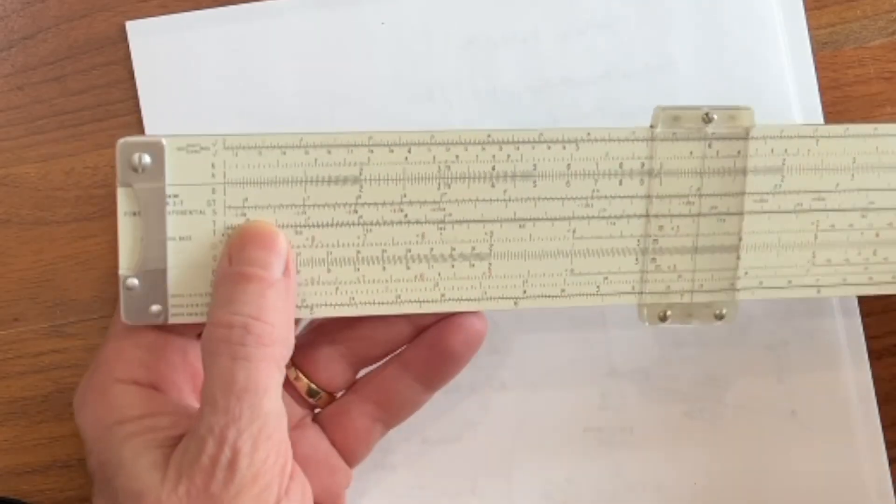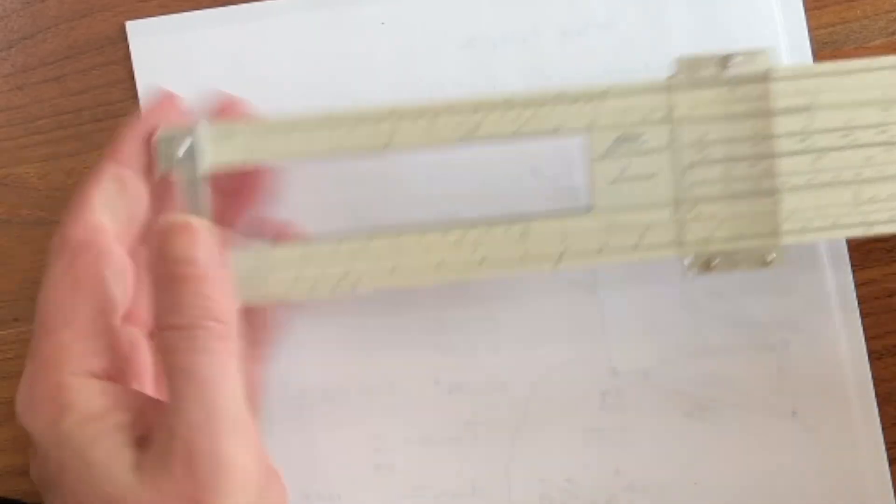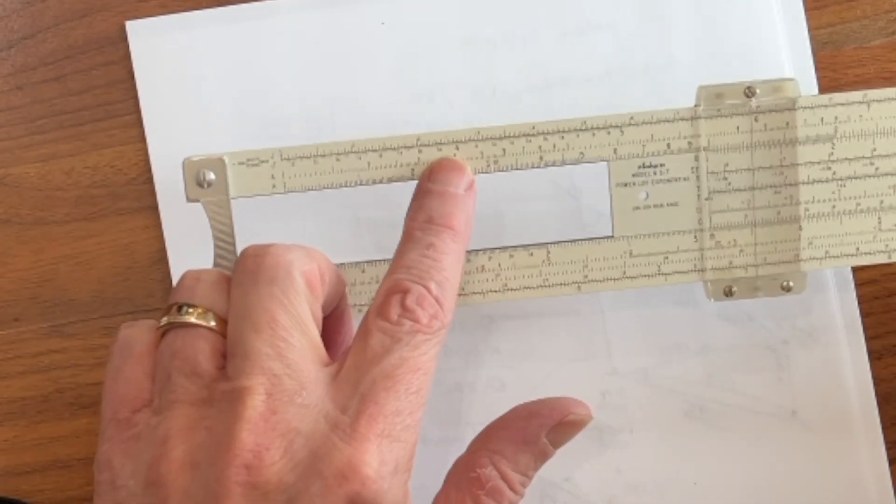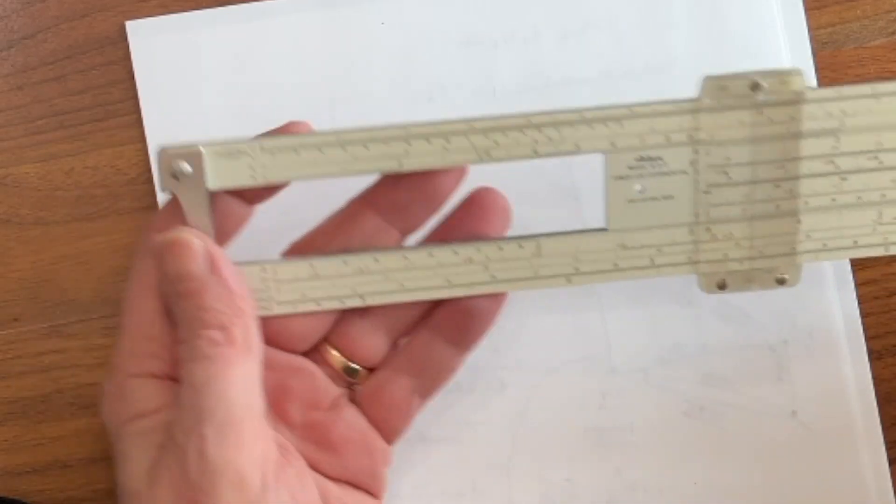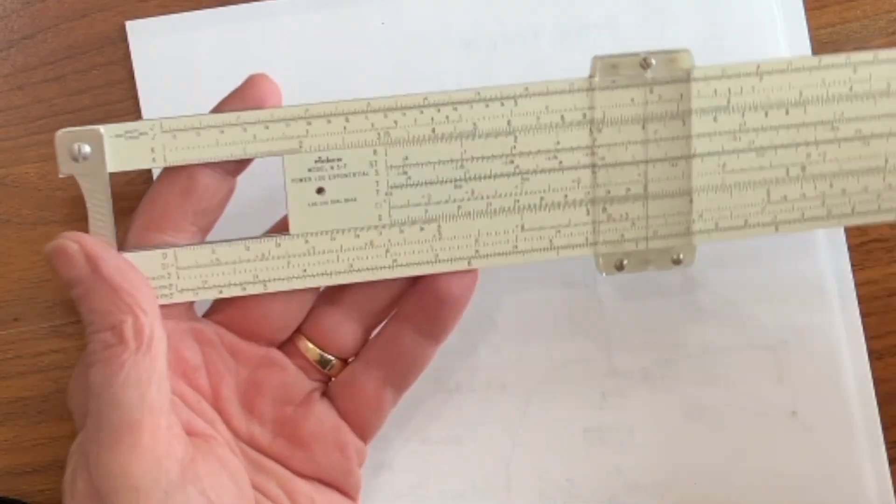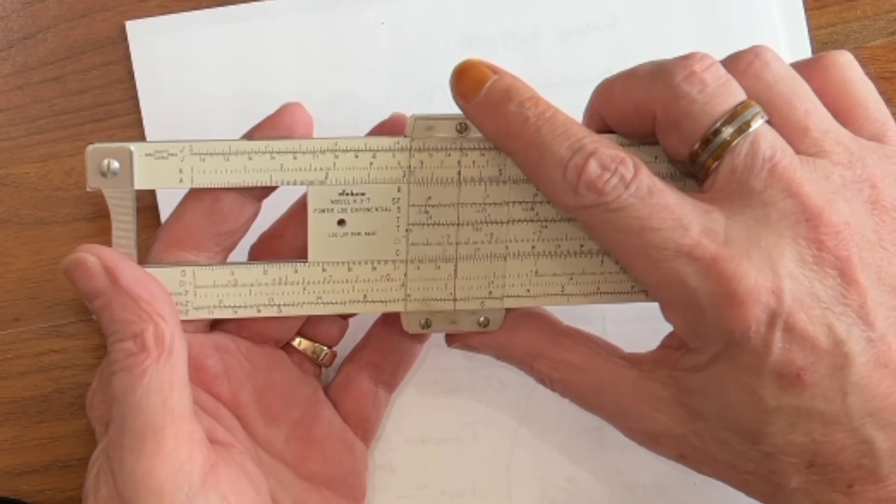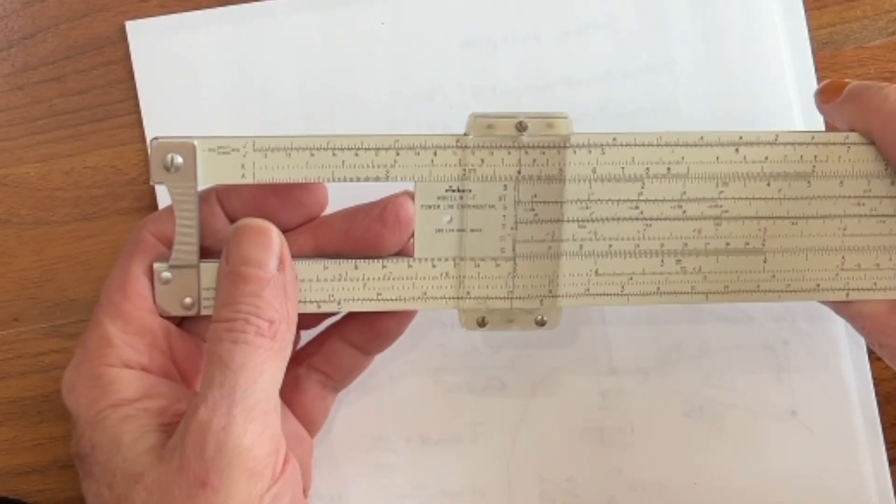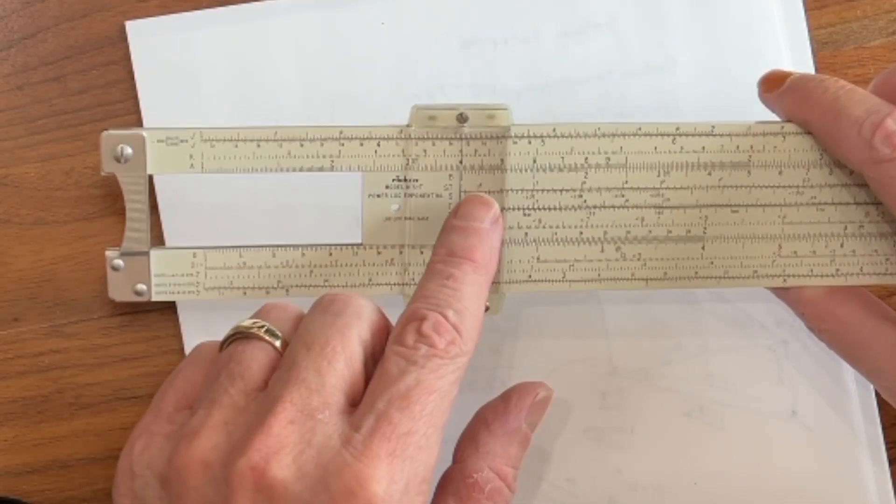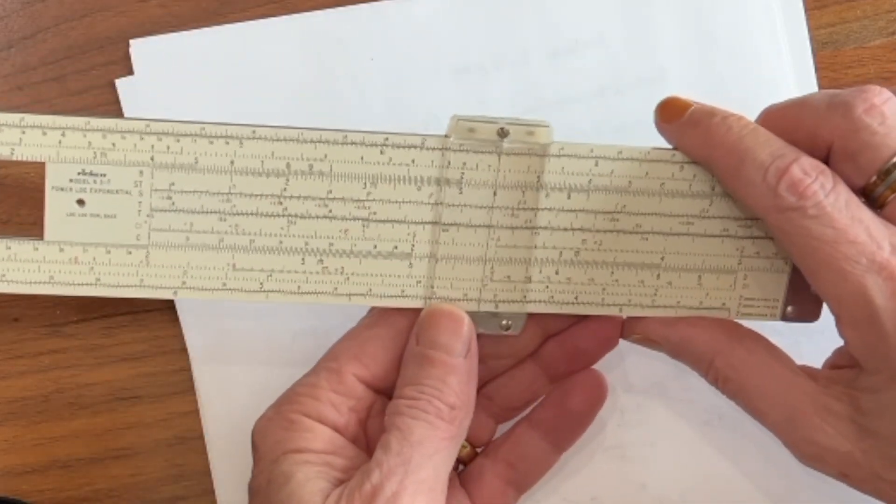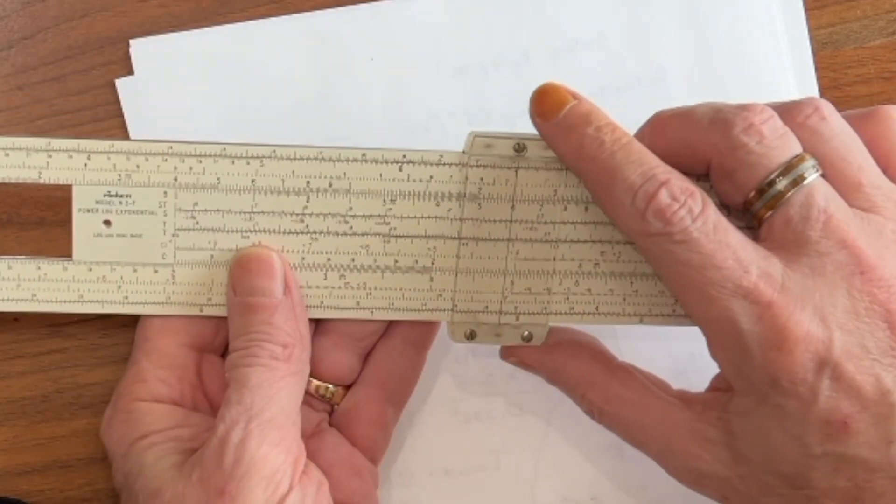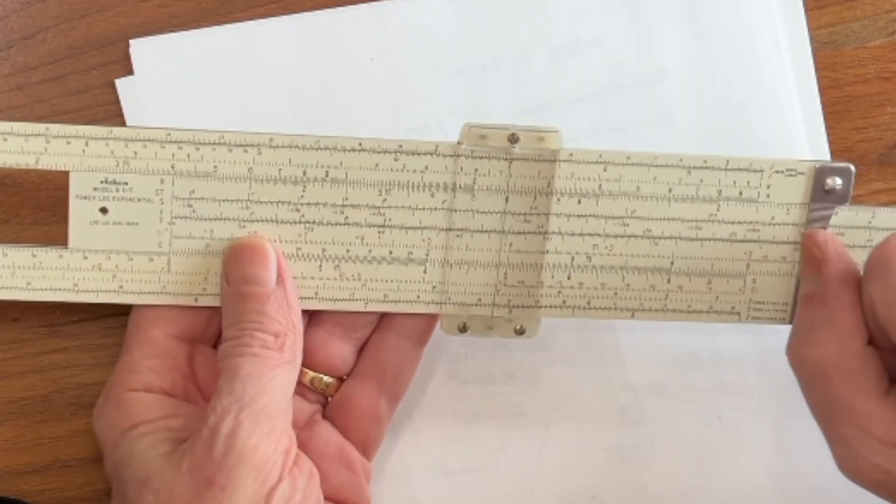For example, remember the number that we're doing something to is going to be on the body of the slide, and then the thing that we're doing to it will be on the slide itself. So let's go ahead and take an old friend. Let's look at 4 and multiply it by 6. We put the cursor on the 4 on the A scale and the index of the B scale right under it. Then all we have to do is come out here to the 6, and with no fuss, no muss, we just read off 24.